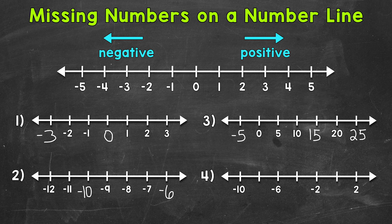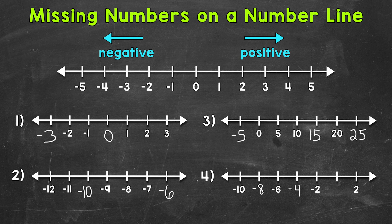Lastly, we have number four. For this one, we don't have any consecutive numbers — meaning no numbers on this number line are next to each other — but we can still use what we're given. We have negative ten, a missing number, negative six, a missing number, negative two, a missing number, and then two. Looking between negative ten and negative six, we have a distance of four. What's directly in between? Negative eight. So negative eight goes there: negative ten, negative eight, negative six. The distance between numbers is two, so we are counting by two. Our next missing number is negative four, then negative two, then zero, and then positive two.